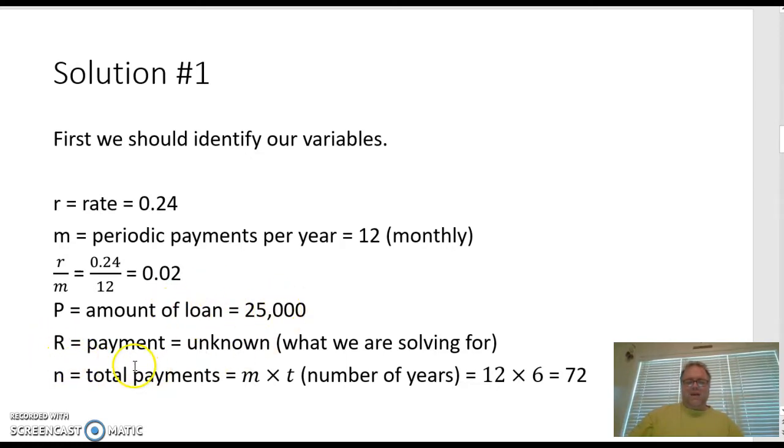The big R is our payment, and that's what we're going to solve for. The little n is the total number of payments. We can find this by doing little m times t, where t is the number of years, which gives us a total of 72.